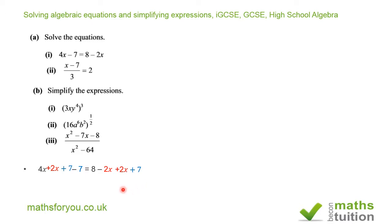On the right hand side the 2x will cancel out, and on the left hand side the 7s will cancel out. We end up with 6x = 15. Dividing both sides by 6, we get x = 15/6. Simplifying by dividing both by 3 gives x = 5/2.